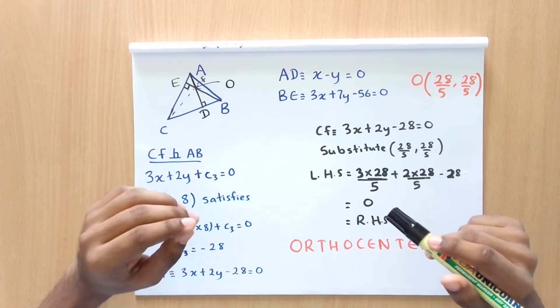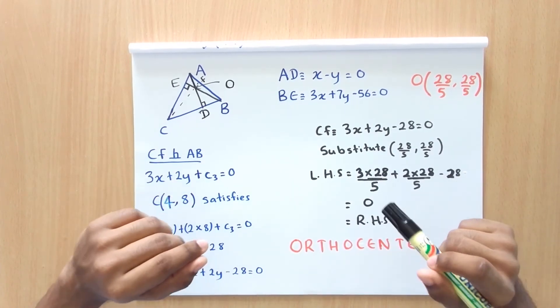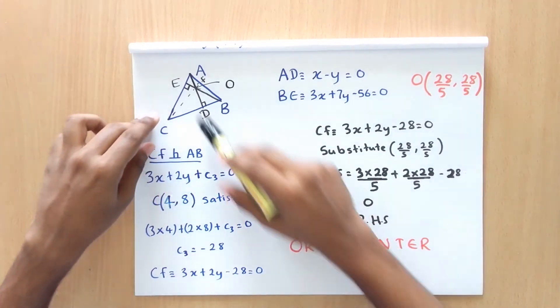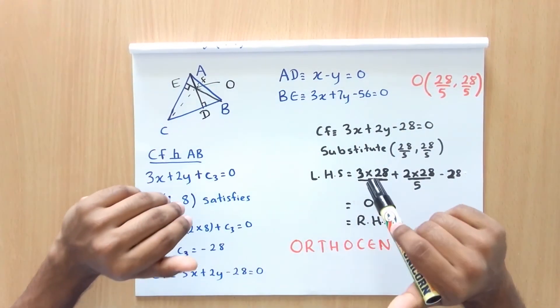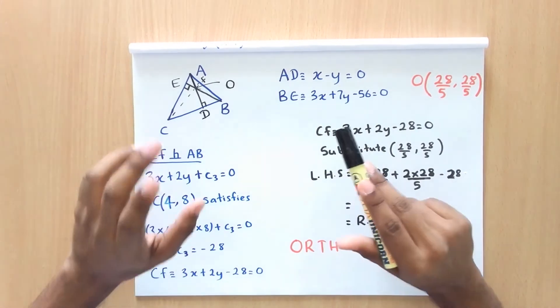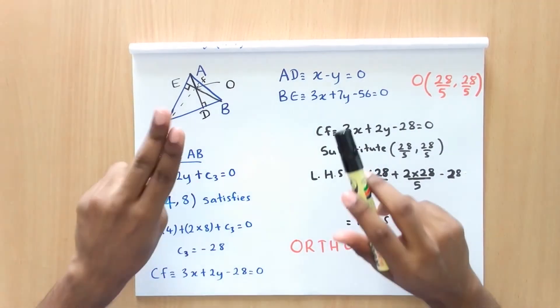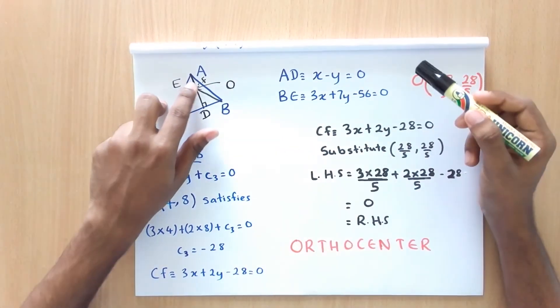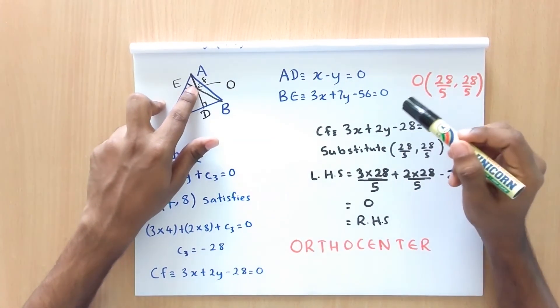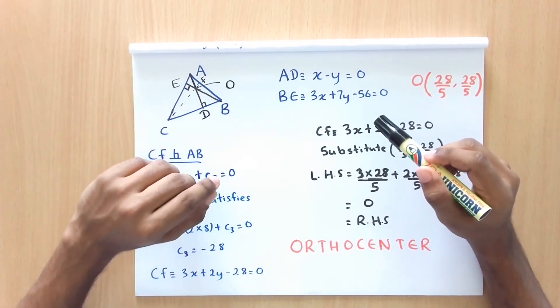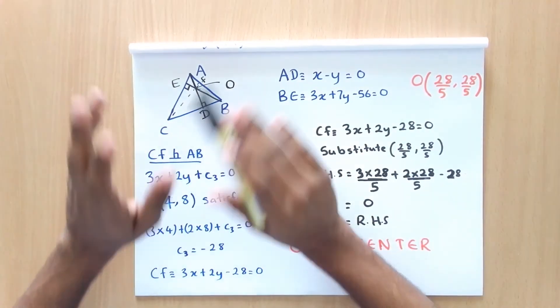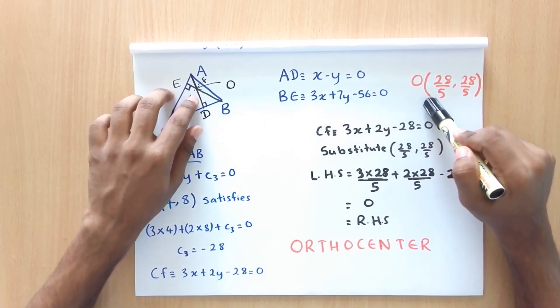Now for the tip of the day. When you are asked to find the coordinates of the orthocenter, you don't have to find the equations of all three altitudes. Instead, find the equations of only two altitudes and then the coordinates of the point of their intersection. This point will definitely be the orthocenter. Since we know that the third altitude will also pass through that same point.